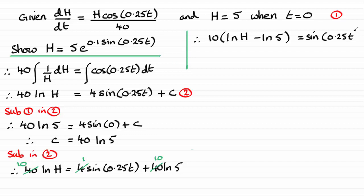Right okay where do we go next? Well we can use the subtraction rule for logs. That turns out to be 10 times the natural log of H divided by 5. And that's going to be equal to that sine of 0.25t.